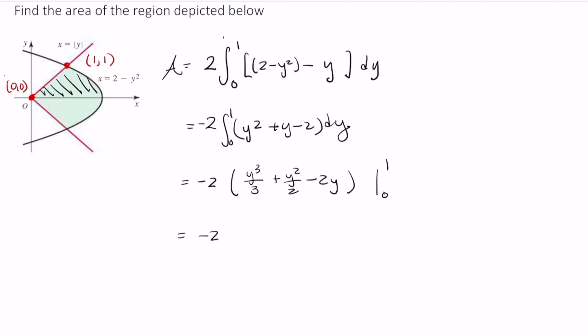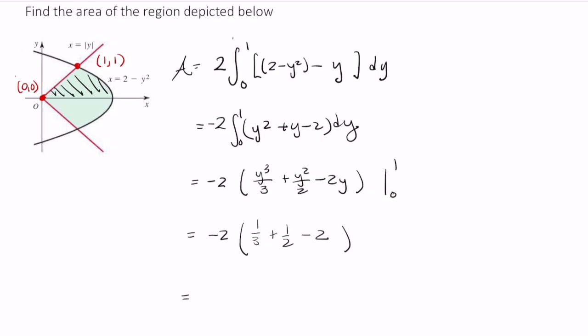So this is negative 2 times 1/3 plus 1/2 minus 2. If you notice, when I evaluate at 0, this whole thing vanishes, so I'm just going to omit that. This works out to negative 2 times negative 7/6, which is 7/3, or just 2.33. I hope this video was helpful.